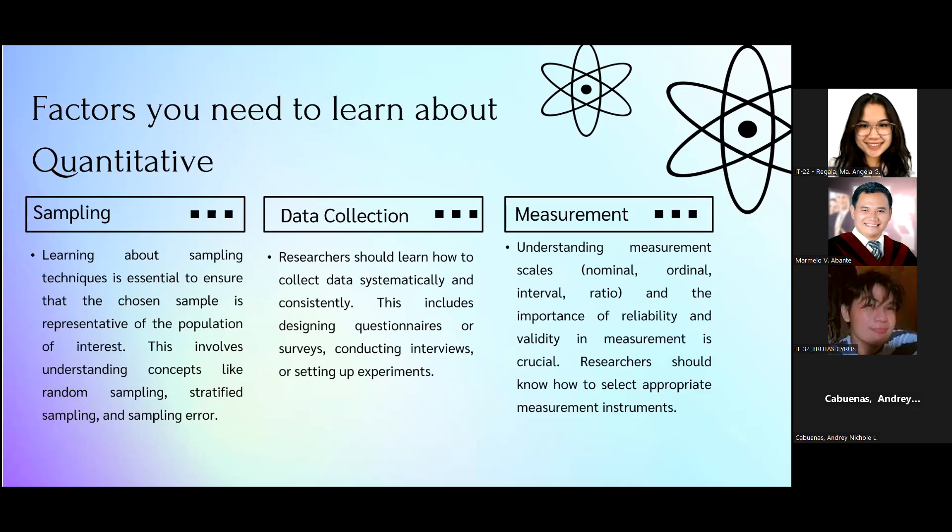In sampling, it is to learn about sampling techniques and it's essential to ensure the chosen sample is representative of the population of interest. This involves understanding concepts like random sampling, stratified sampling, and sampling error. In data collection, researchers should learn how to collect data systematically and consistently. This includes designing questionnaires or surveys, conducting interviews, or setting up experiments.